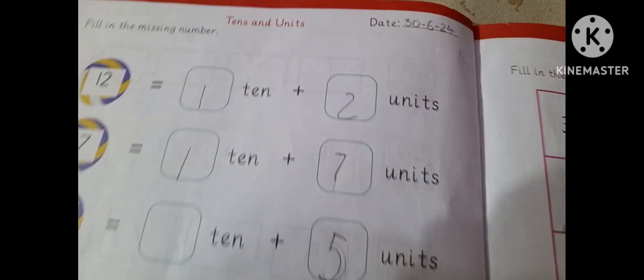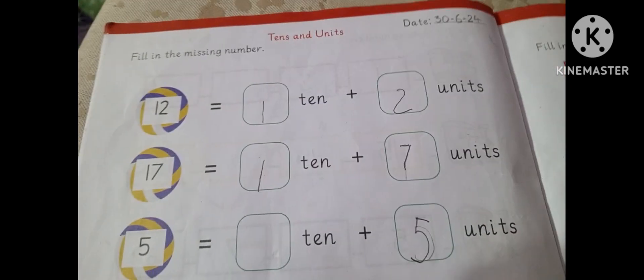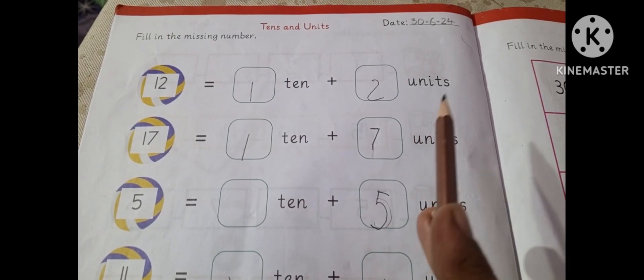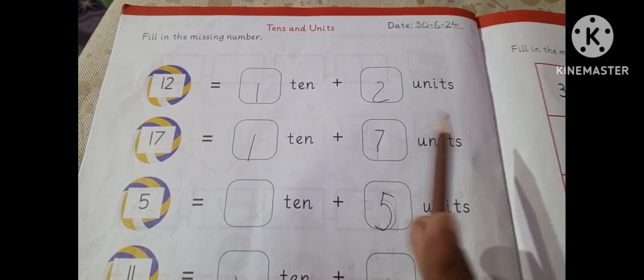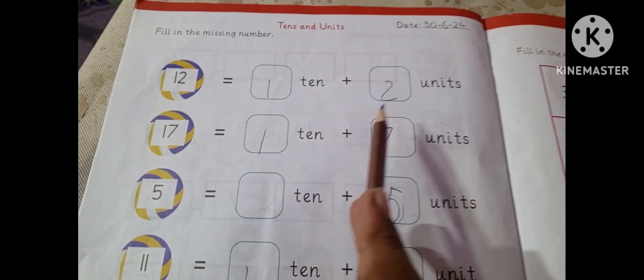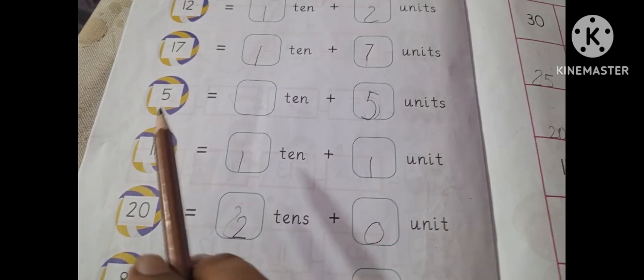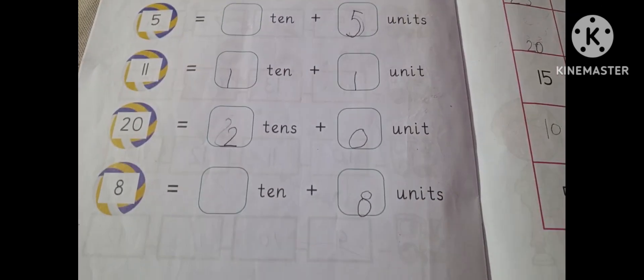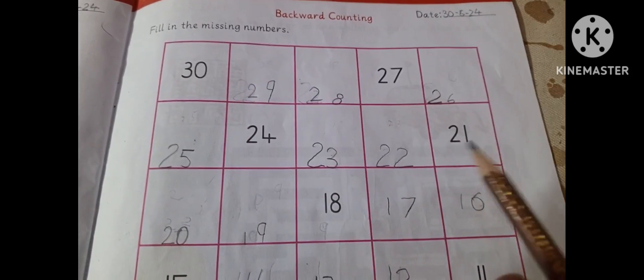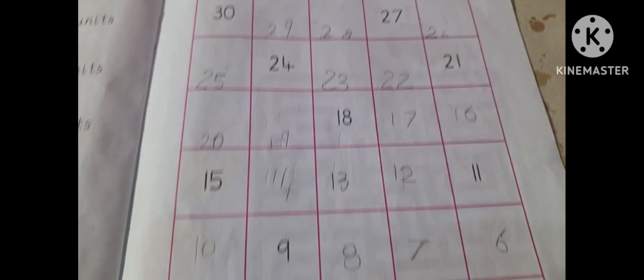We will complete it. Now you have to solve the questions up to 10. You can write the answers. This is the answer. The answer from 12 will include 10.